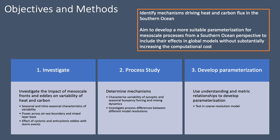So our first priority is to investigate the impact of mesoscale fronts and eddies on variability of carbon and heat, then proceed to a process-based study where we determine the mechanisms that drive those. And lastly, we want to develop a parameterization and test it in coarser resolutions and in global Earth system models.